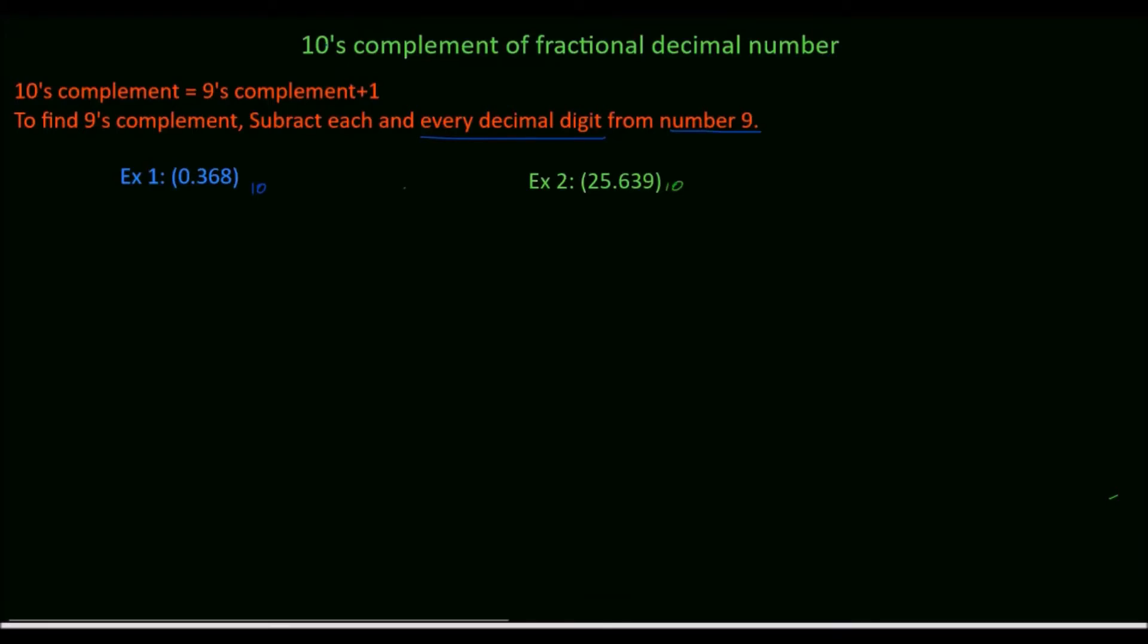In this tutorial, we will see how to find 10's complement of fractional decimal number. To find 10's complement, we have to add 1 with the 9's complement. To find 9's complement, we have to subtract each and every decimal digit from number 9.